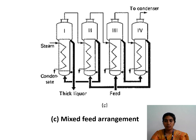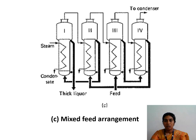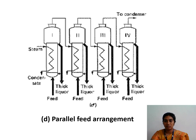Next is the mixed feed arrangement. Mixed feed is a combination of backward feed and forward feed. The feed material enters at the third evaporator and moves forward to the fourth evaporator. After concentrating in the fourth evaporator, it moves backward to the second evaporator and then to the first evaporator, where the final product is collected. Steam flows in the same way as in the previous cases.